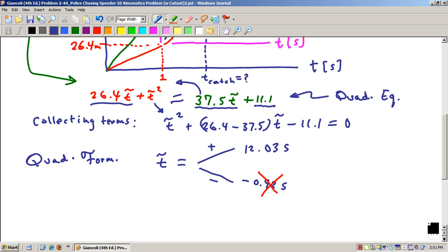And so the answer to the question is T-tilde is 12.03 seconds which means that the original time which was T-tilde plus a second should be 13.03 seconds.